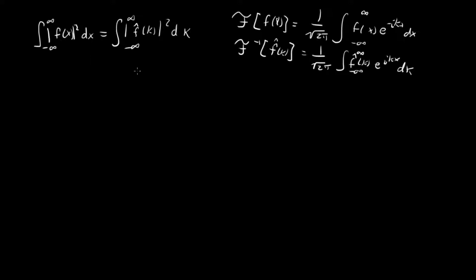In this convention, the Fourier transform is said to be unitary. This result is a statement of unitarity — it's saying that the length of the function f of x, or the integral of its value squared, is unchanged when you go between f of x and the Fourier transform of f of x. This is important especially for quantum mechanics, but this isn't a quantum mechanics video.